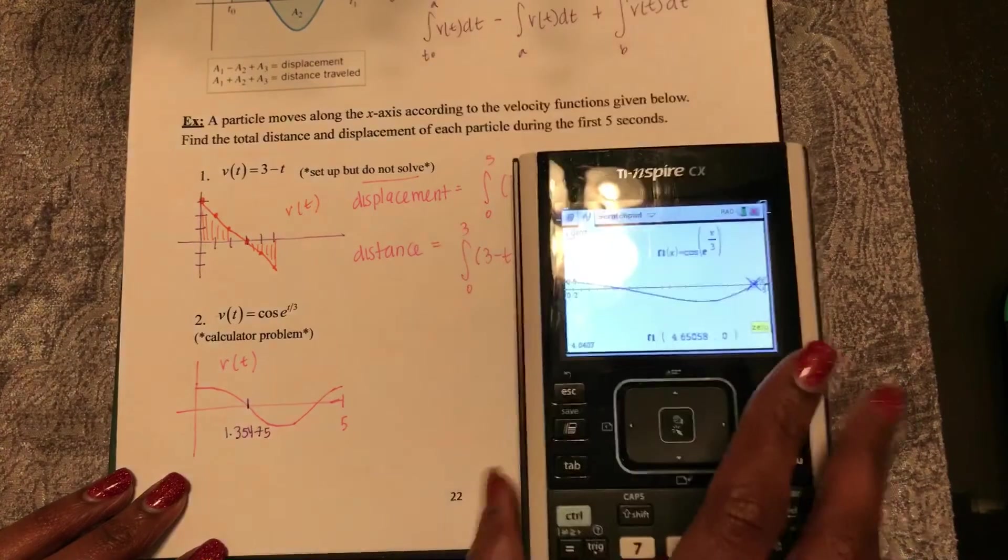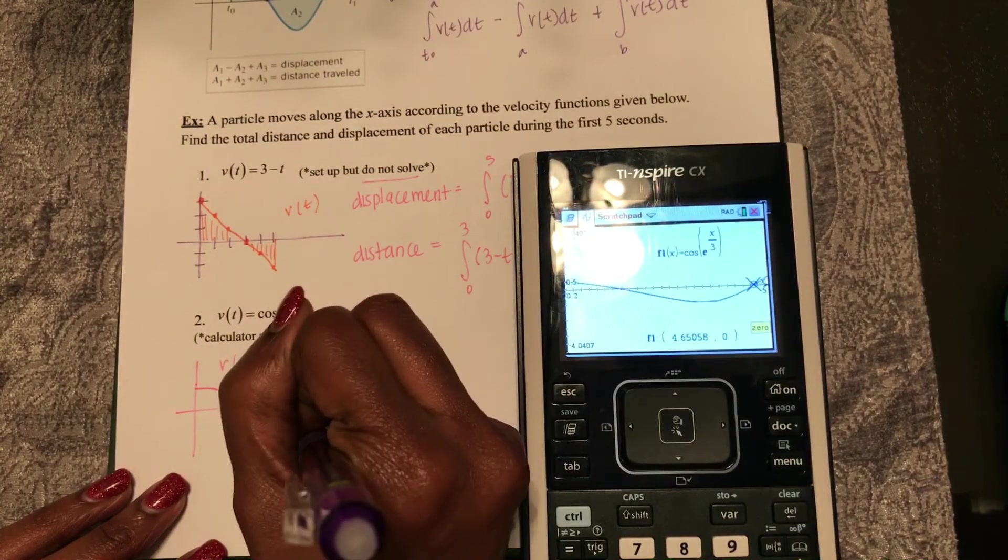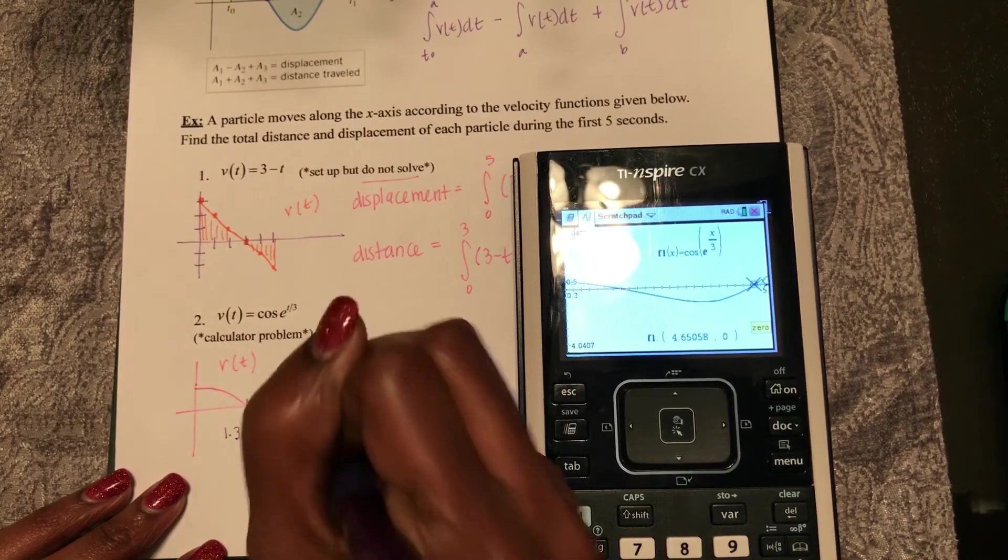And so this next value where it crosses is 4.65058.